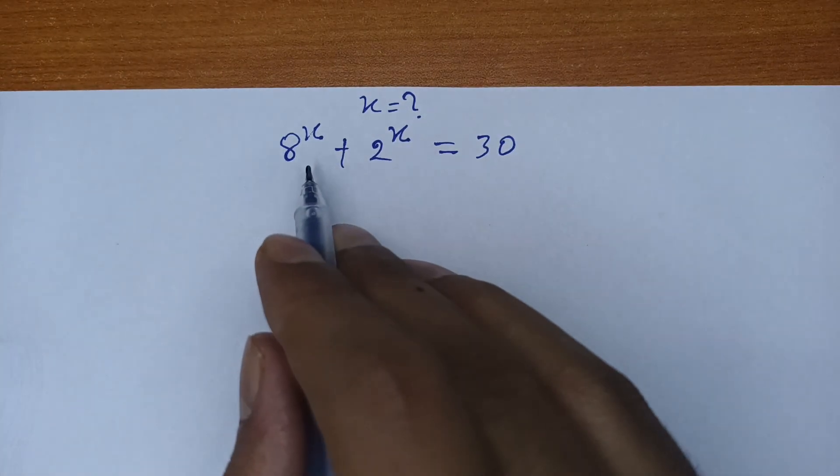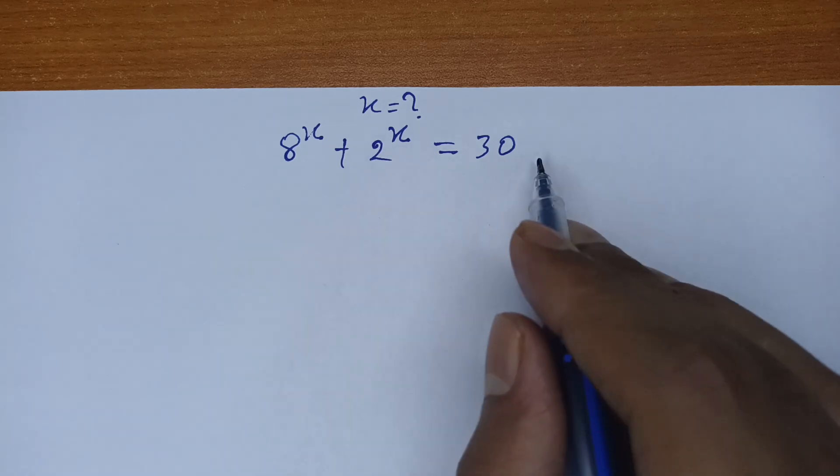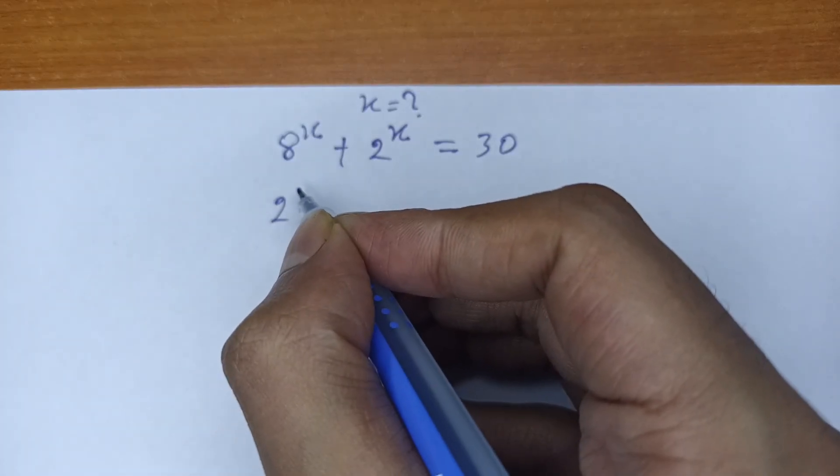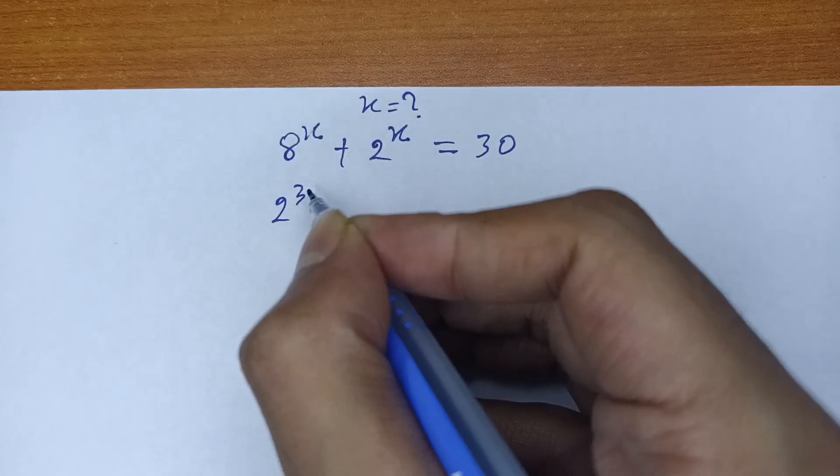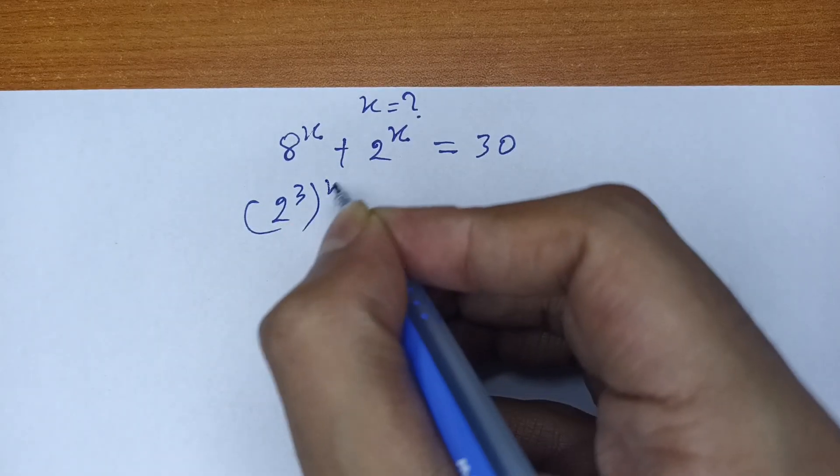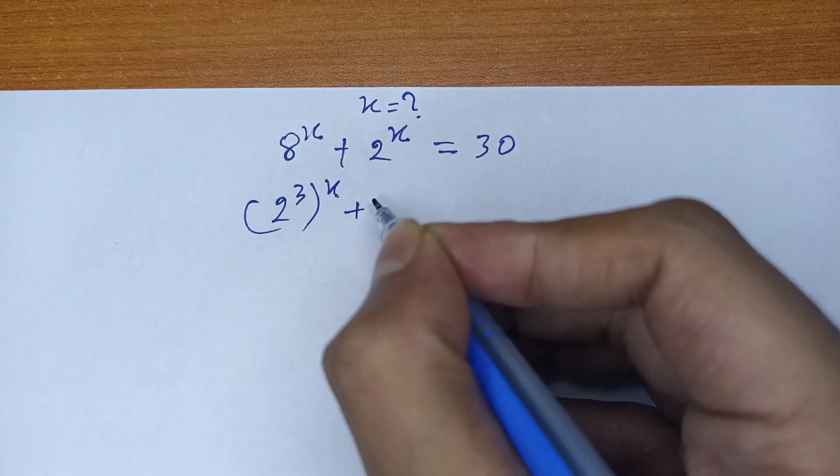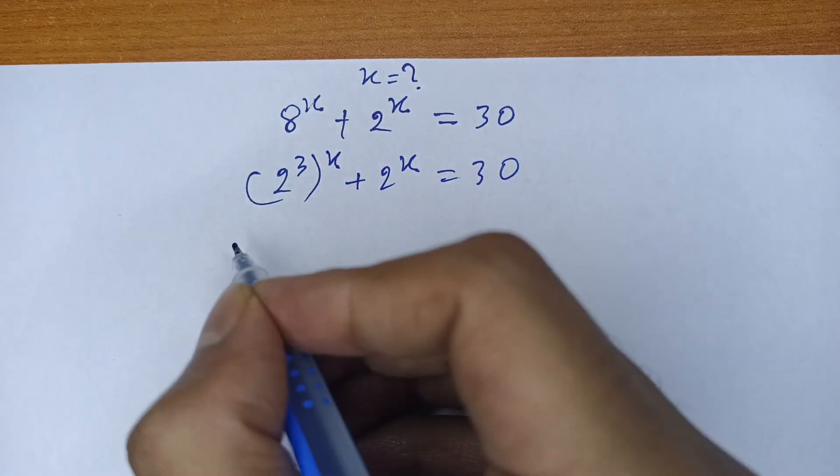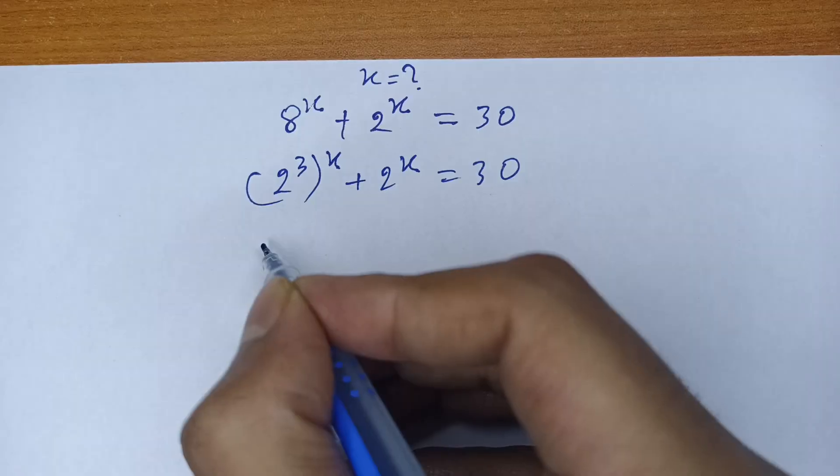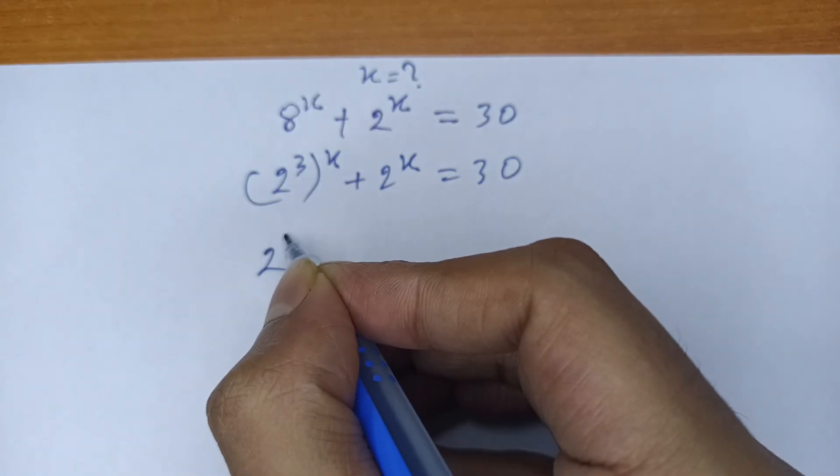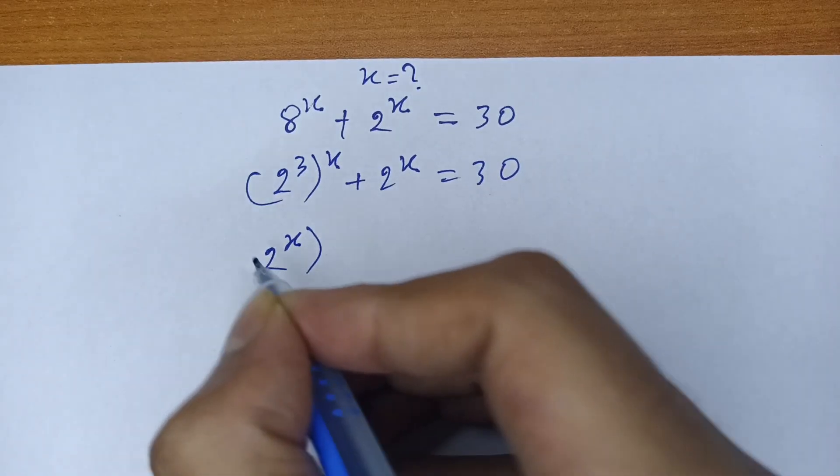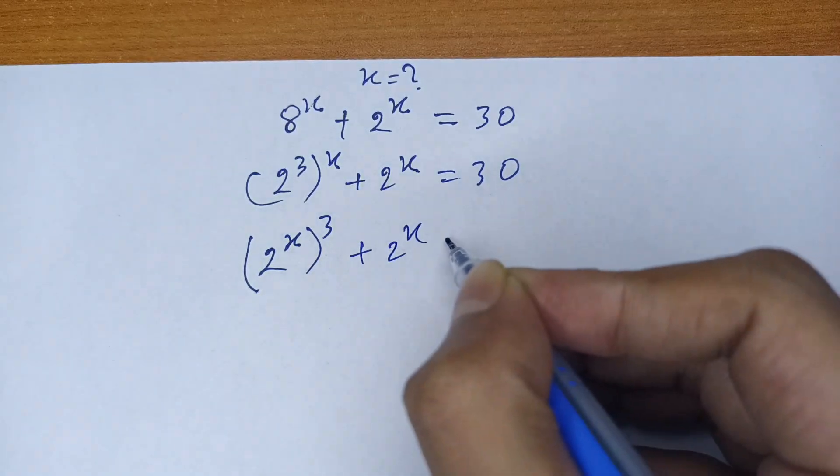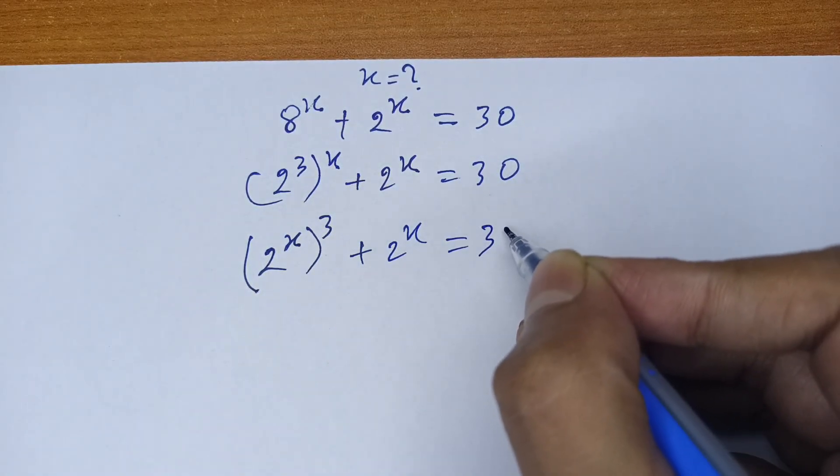First of all, our equation is 8 to the x plus 2 to the x equals 30. I can write it as 2 to the power 3 to the x plus 2 to the x equals 30. Then I can write it as 2 to the x to the 3 plus 2 to the x equals 30.